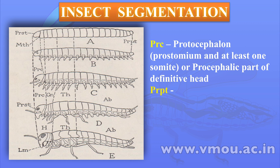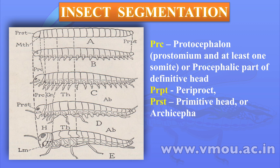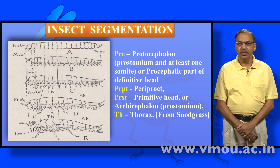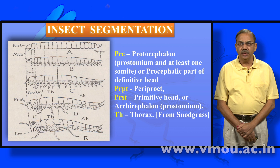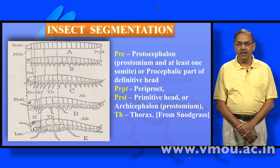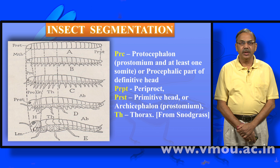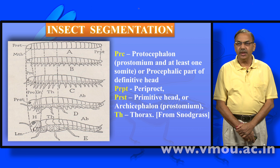In diagram D, one can see the enlargement of the sixth, seventh, eighth and ninth segments, as well as the caudal or the second, seventh and eighth segments of the abdomen. In diagram E, this is a fully developed insect. One can see the distinct head, the three segments of the thorax and remaining segments of the abdomen.